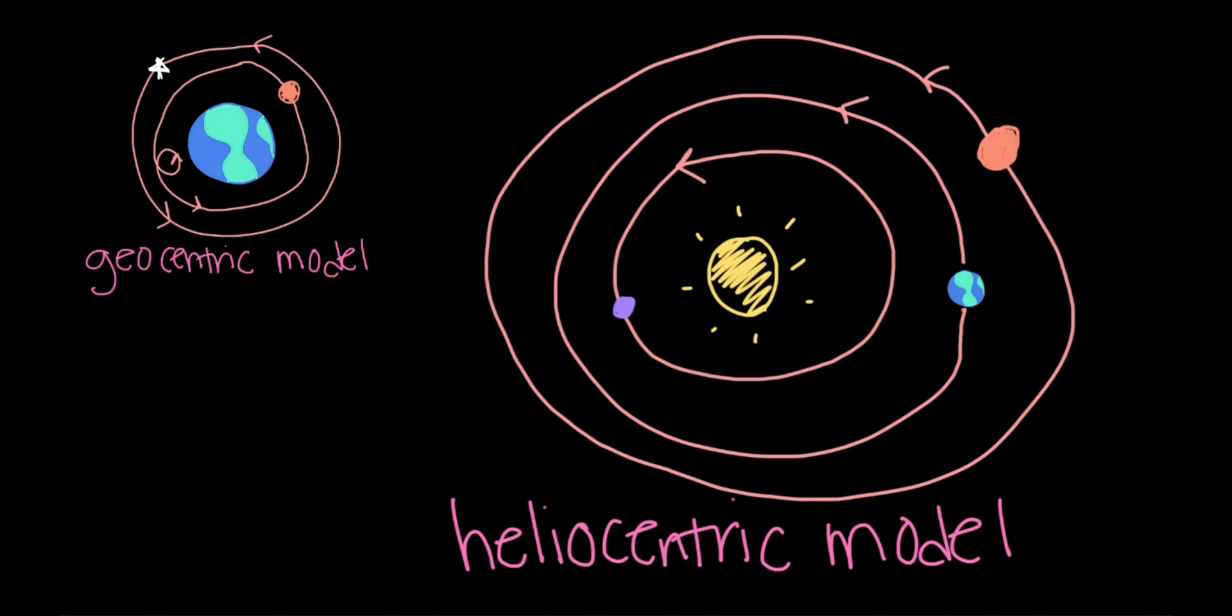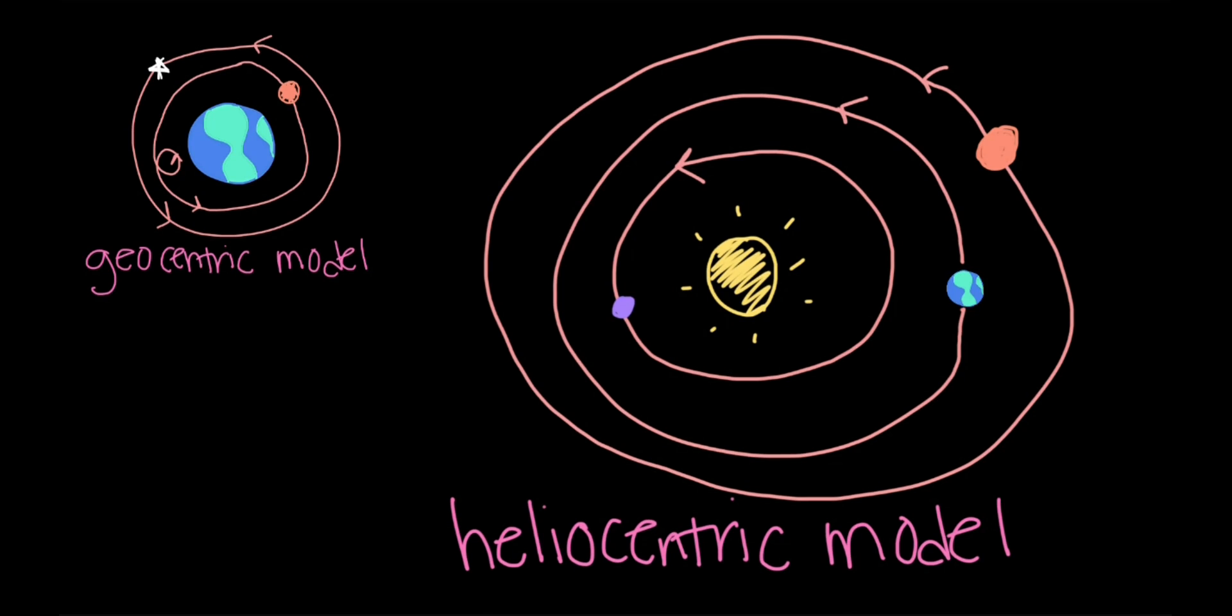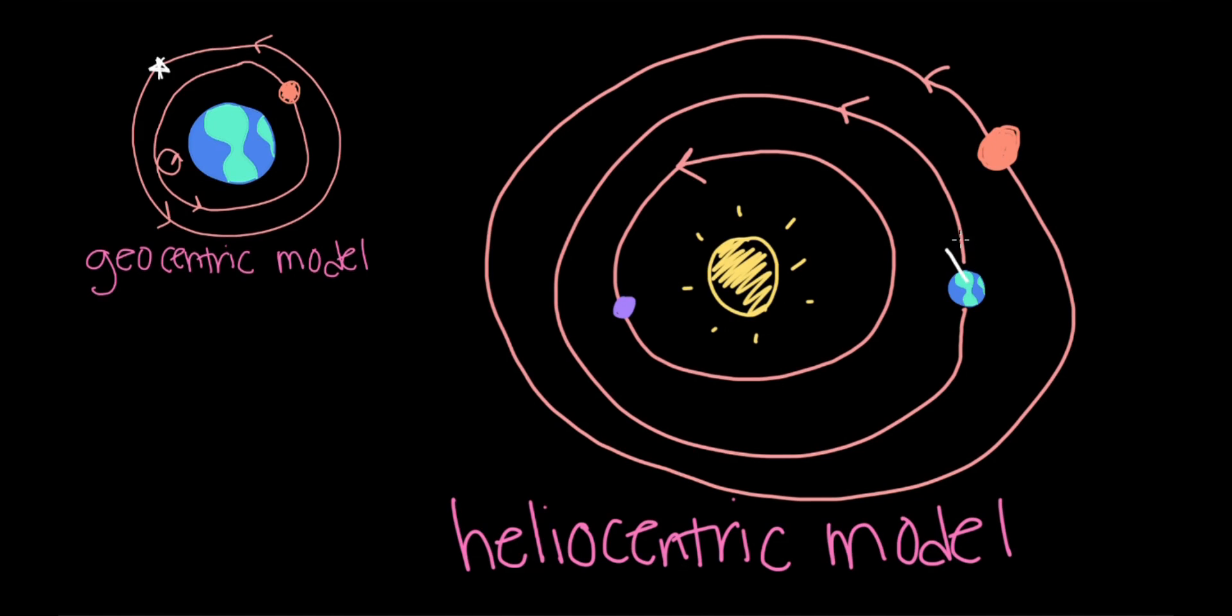Now, you may be wondering, in this model, the Sun is stationary. So why does it seem to be moving across the Earth's sky each day? This is actually easily explained because the motion of the Sun in the sky is not actual motion, it is apparent motion. Not only is the Earth revolving around the Sun - revolving means orbiting - but the Earth is also spinning on its own axis.